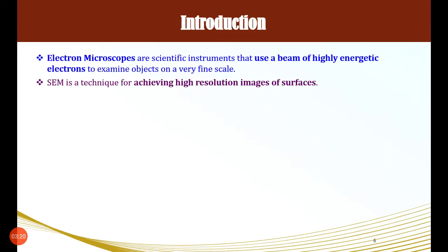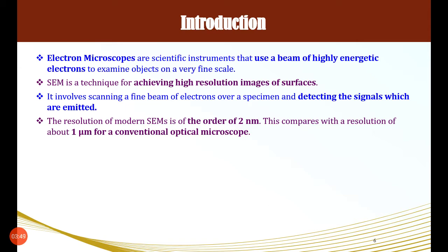Electron microscopes are scientific instruments that use a beam of highly energetic electrons — this is the main point. For optical microscopes we use simple light, and for electron microscopes we use highly energetic electrons. SEM is a technique for achieving high-resolution images of surfaces. It involves scanning a fine beam of electrons over a specimen and detecting the signals which are emitted. The resolution of SEM is up to 2 nanometers.